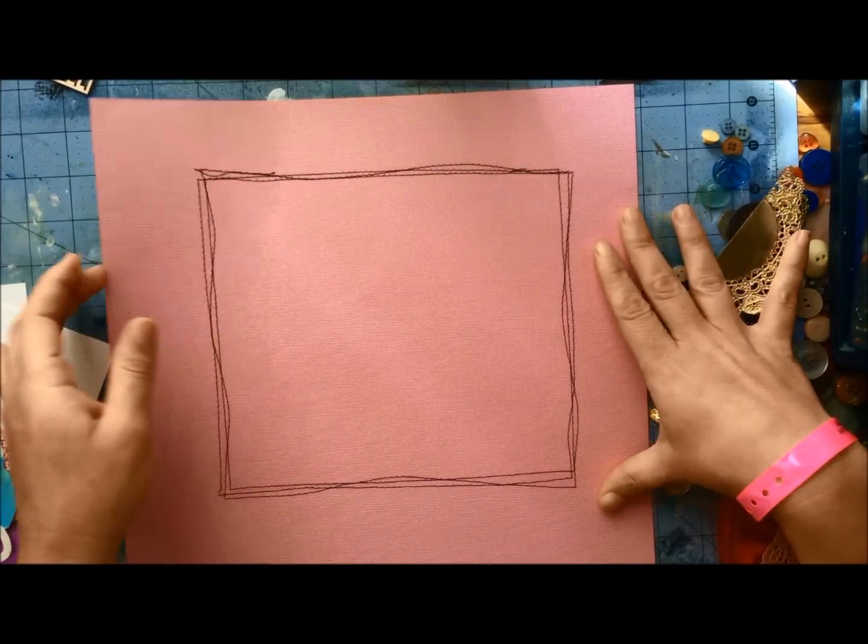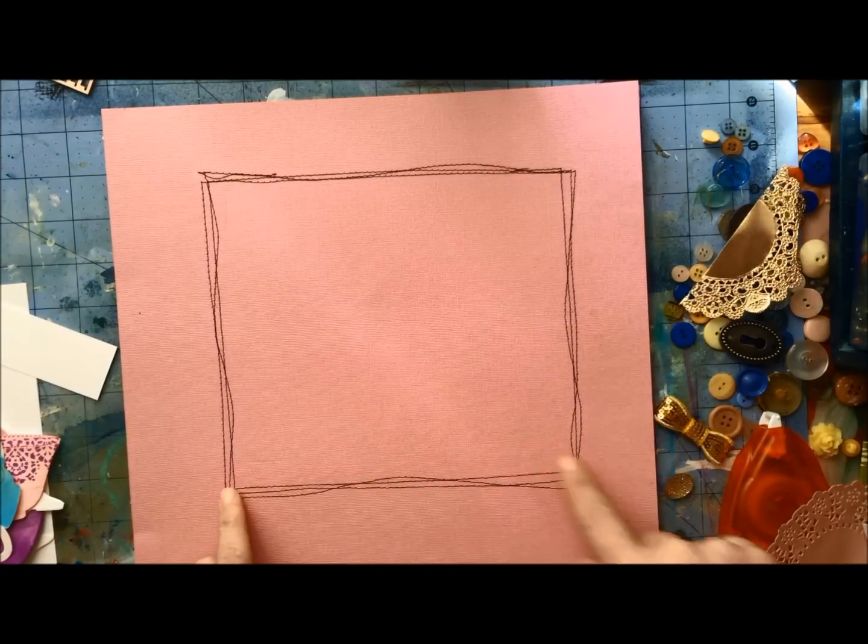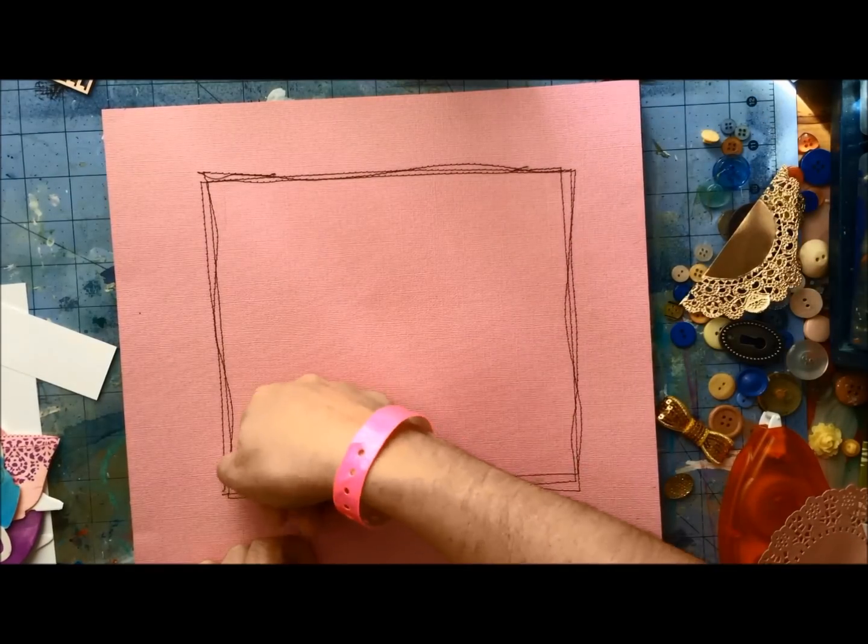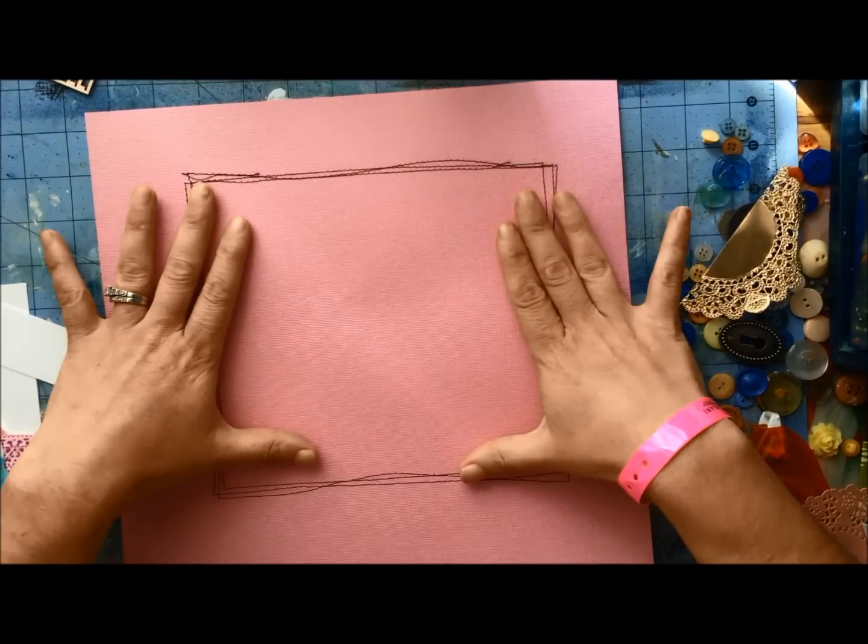So what I have here is 12 by 12 cardstock, and I went and machine stitched three times around. I made just my thumbnail, I just made a few little marks where I wanted the absolute minimum size to be.